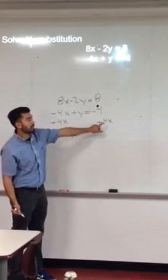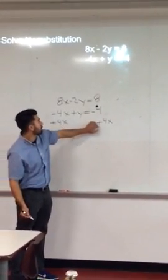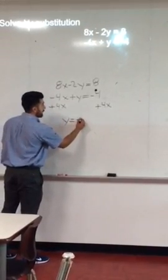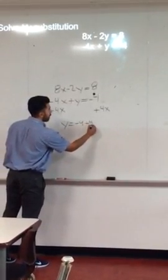Because negative four and four x are not like terms I cannot combine them. So I'm just going to rewrite this next to this when I bring it down. So then I would have y equals negative four plus four x.